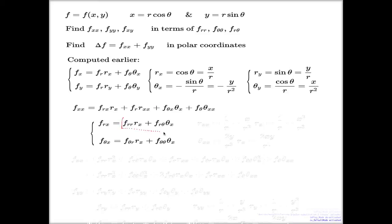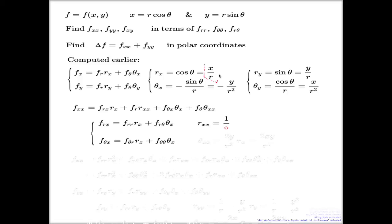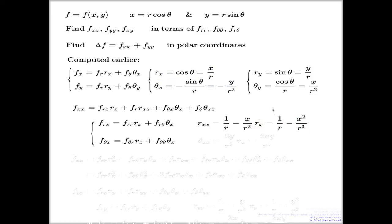I'm going to substitute this expression in here, and this expression in here. But before I do that, I need to find the second derivatives of the inverse polar maps. For r double x: I take r sub x and differentiate by x again. I prefer the product rule over the quotient rule. So it's the derivative of x times (1/r): derivative of x is 1, times (1/r), plus x times the derivative of (1/r), which is negative 1 over r squared, with the chain rule bringing in another r sub x factor. That gives the second x derivative of the inverse polar map.